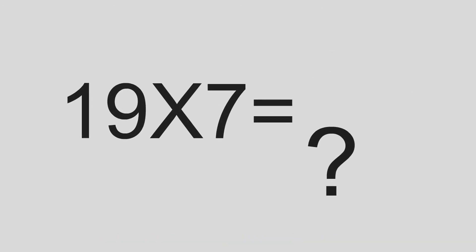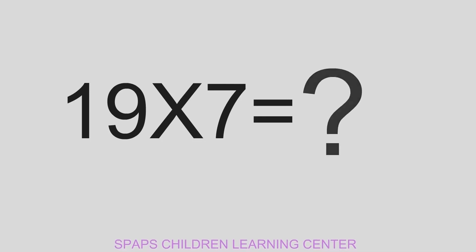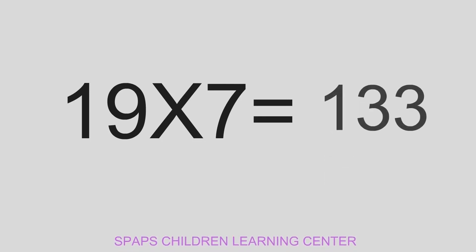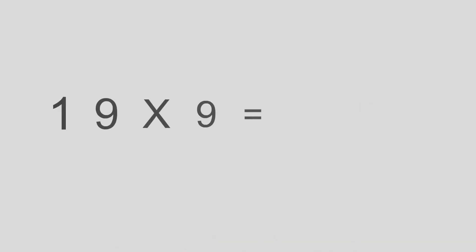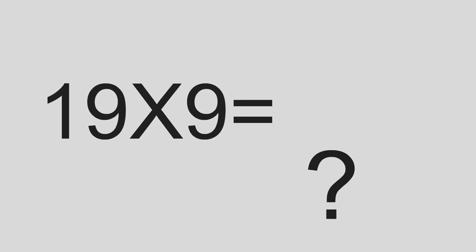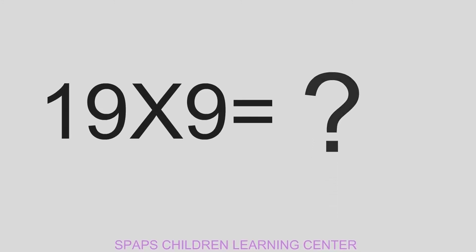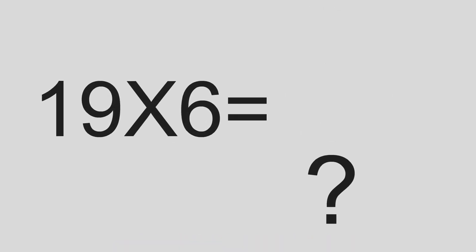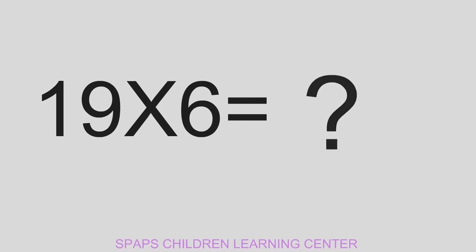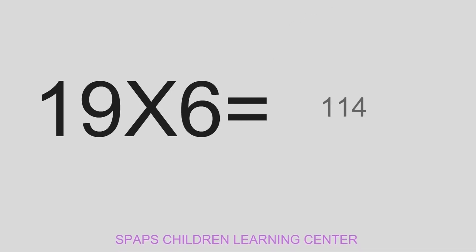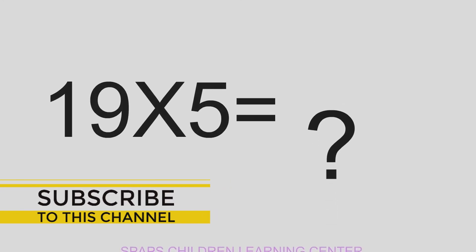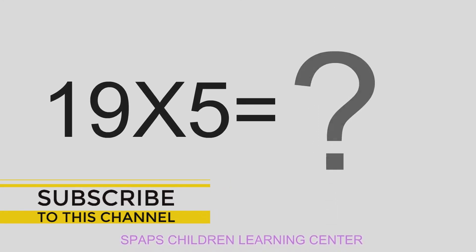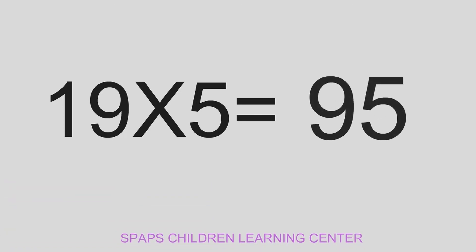19 x 10 equals to 190. 19 x 7 equals to 133. 19 x 9 equals to 171. 19 x 6 equals to 114. 19 x 5 equals to 95.